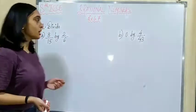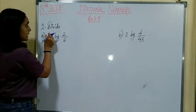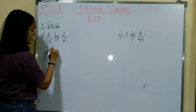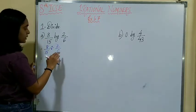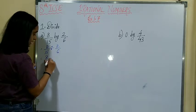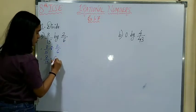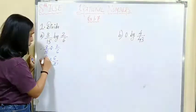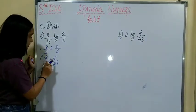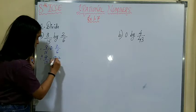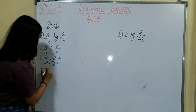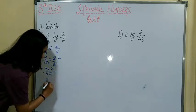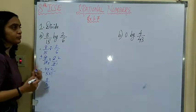Now we start with the 7th exercise. The first question: divide 8 upon 15 by 2 upon 6. That is 8 upon 15 divided by 2 upon 6, which equals 8 upon 15 multiplied by the reciprocal 6 upon 2. Reducing: 2 divides into 8 giving 4, and 3 divides into 6 giving 2 and into 15 giving 5. So we get 4 multiplied by 2 upon 5 multiplied by 1, which gives 8 upon 5 as the answer.